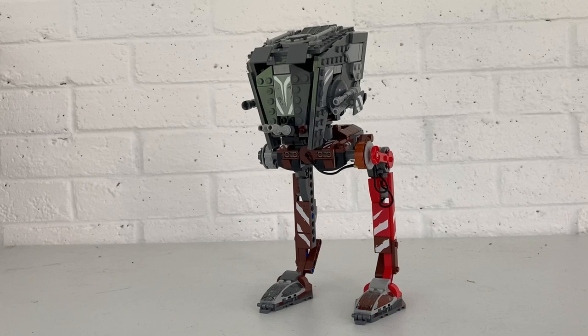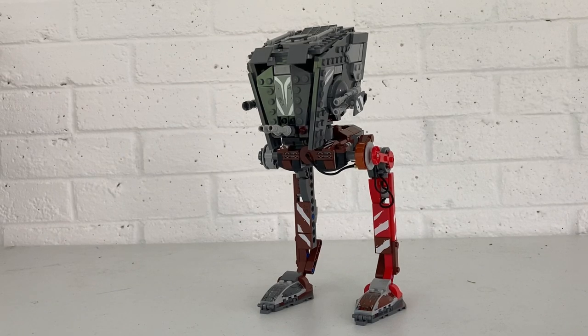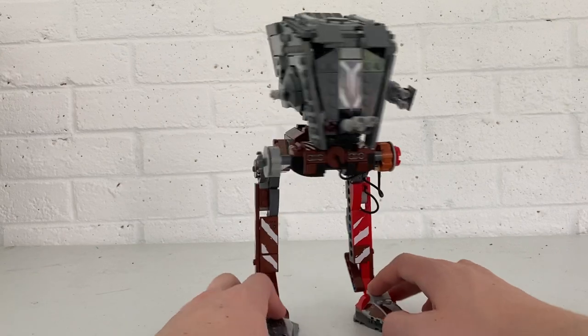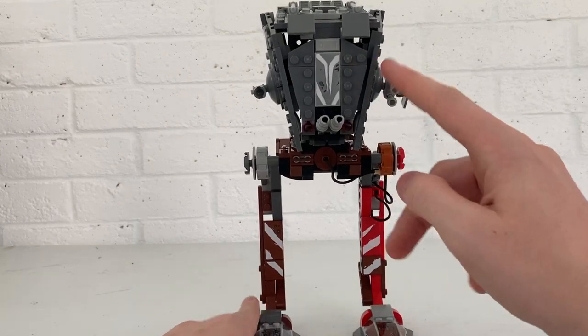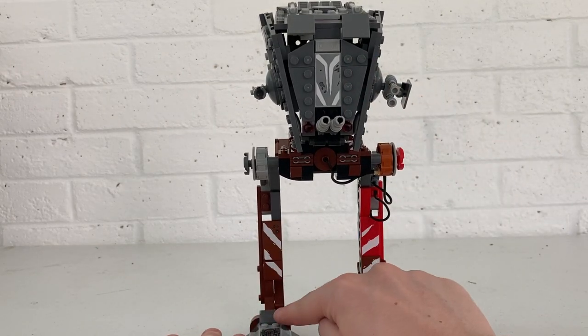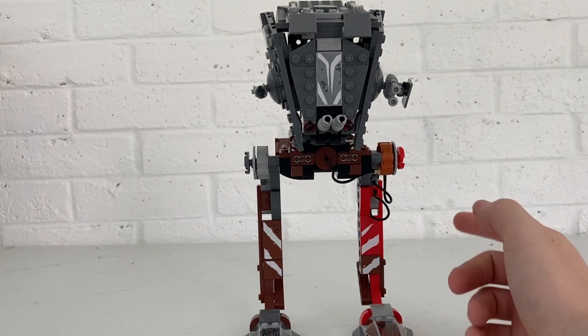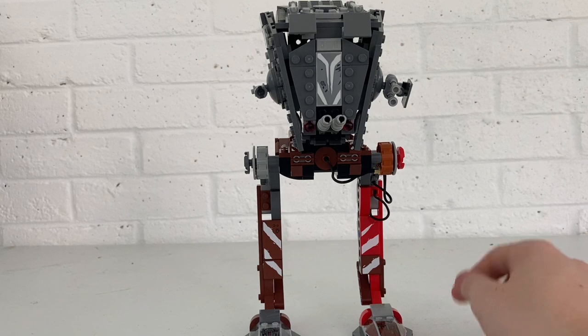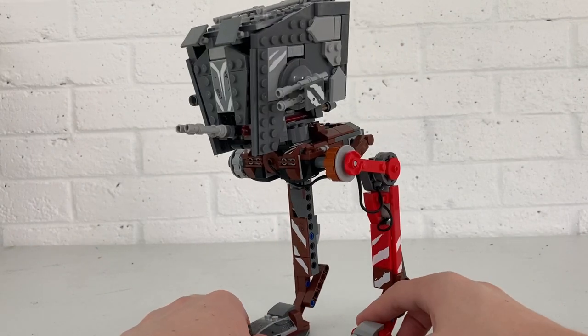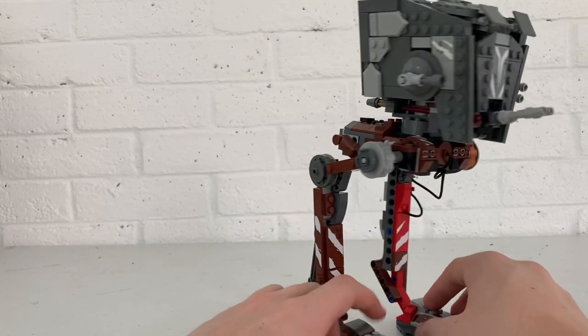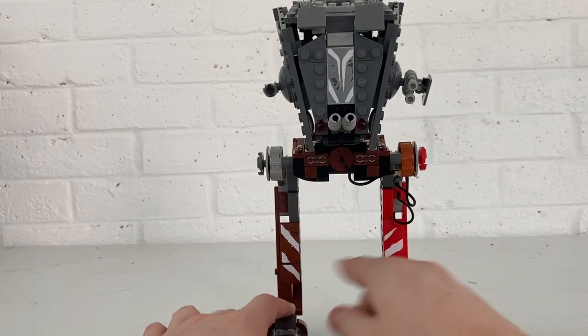Here we have the AT-ST Raider. To start out with, we got some weird color combinations. We got the gray up here, then brown over here, and then red and a bit of brown down here. It's just a weird combination that you normally wouldn't see for an AT-ST, but of course this is a Raider, an AT-ST Raider.